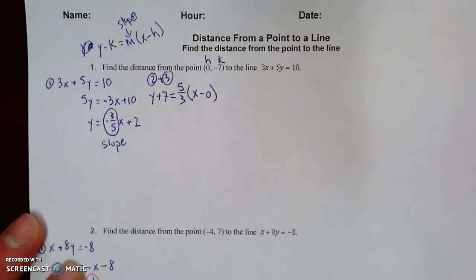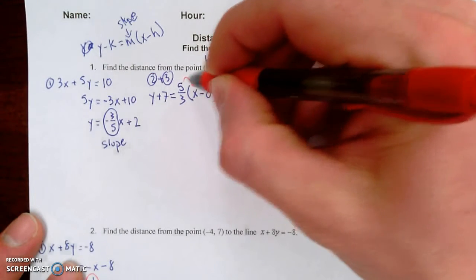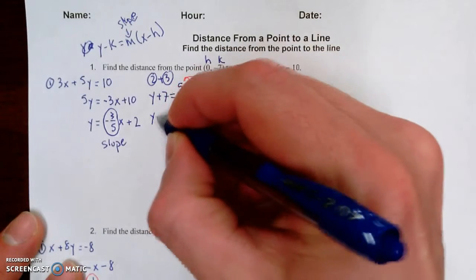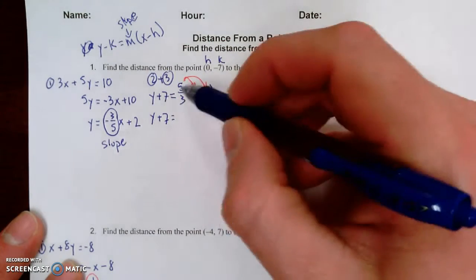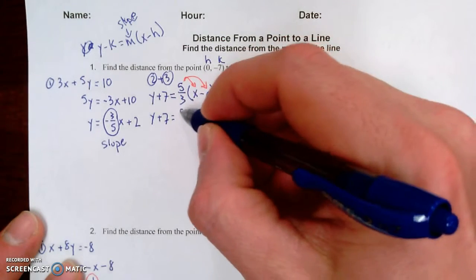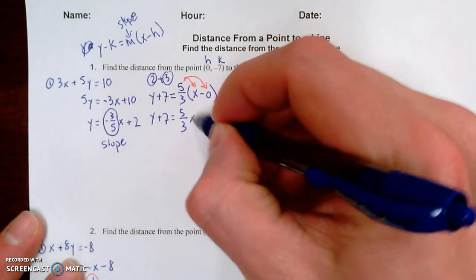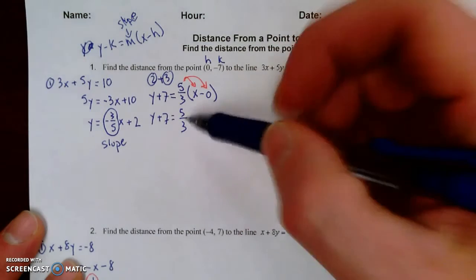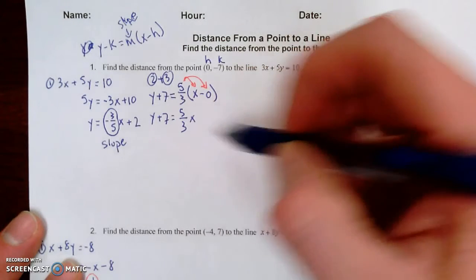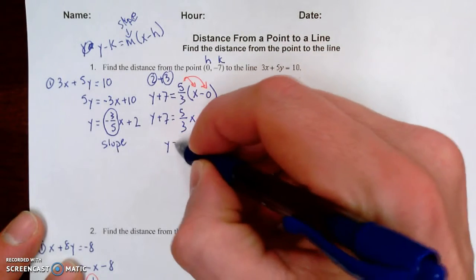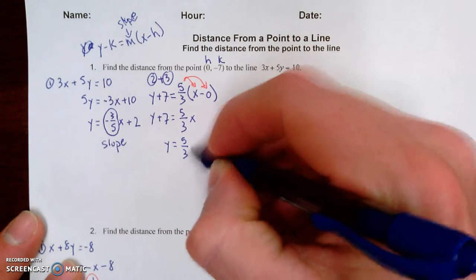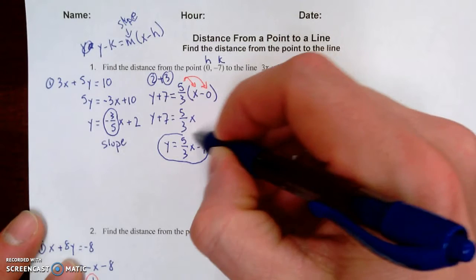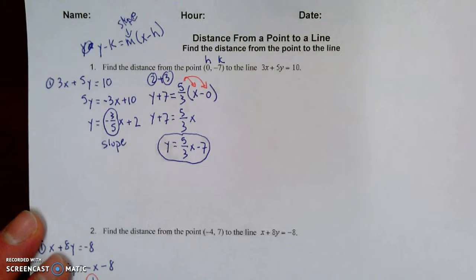Now, step three, we're going to change it into slope-intercept form. So as you recall, first thing we do is distribute to get rid of the parentheses. And this part over here is just going to stay the same. So we've got five-thirds times x is five-thirds x, and five-thirds times zero is just zero. Then we're going to subtract seven from both sides, and we get y equals five-thirds x minus seven. So this is the equation of our perpendicular line.